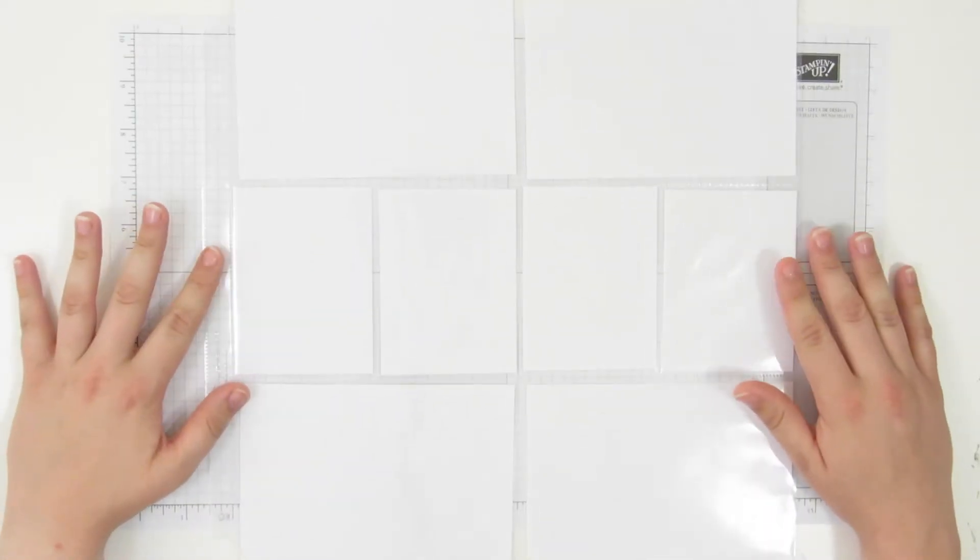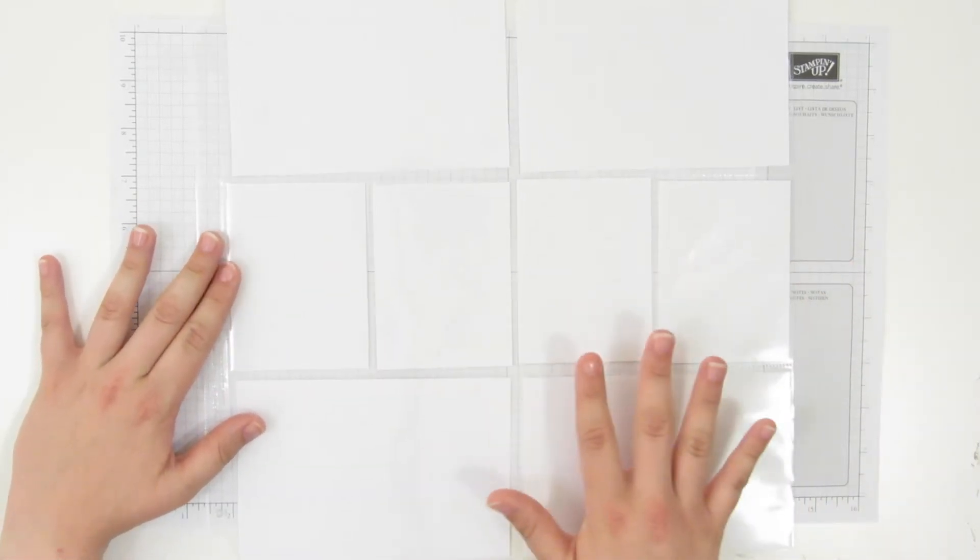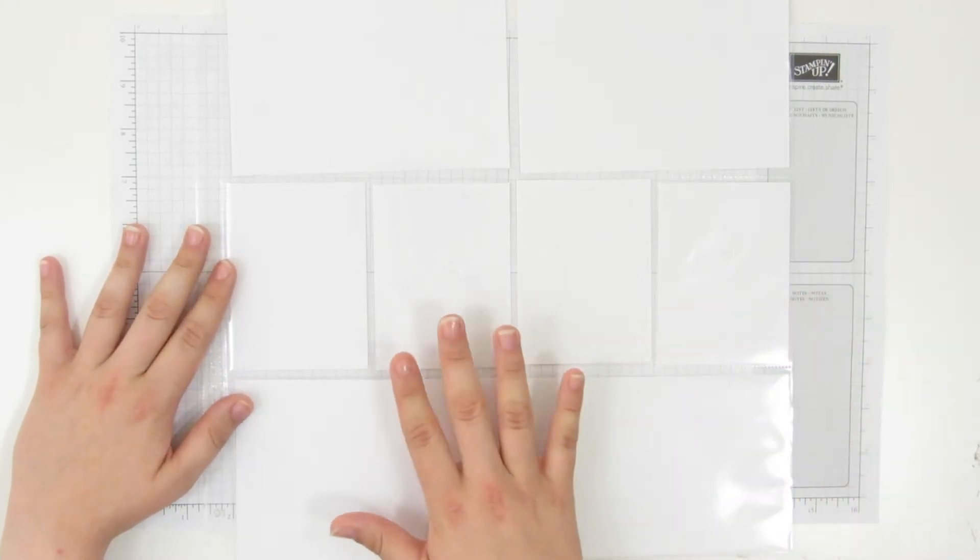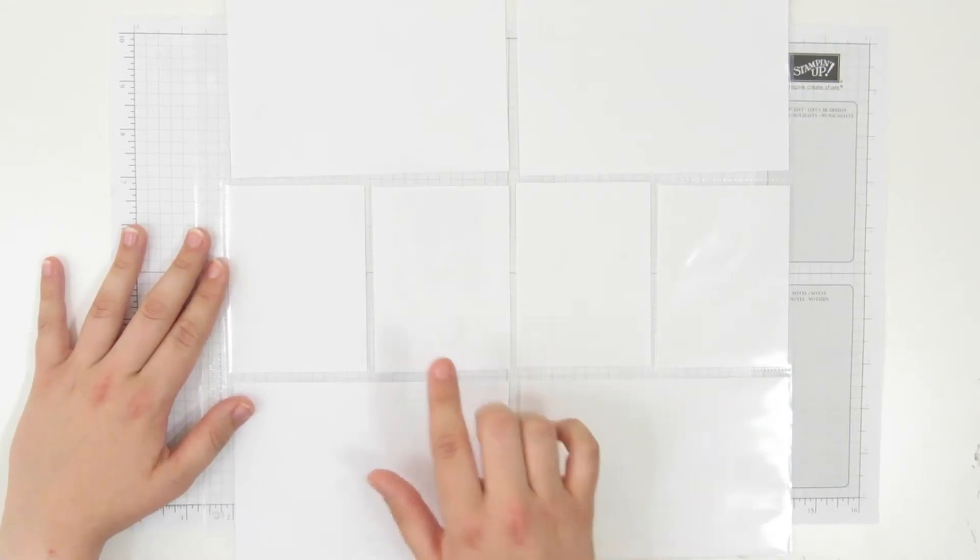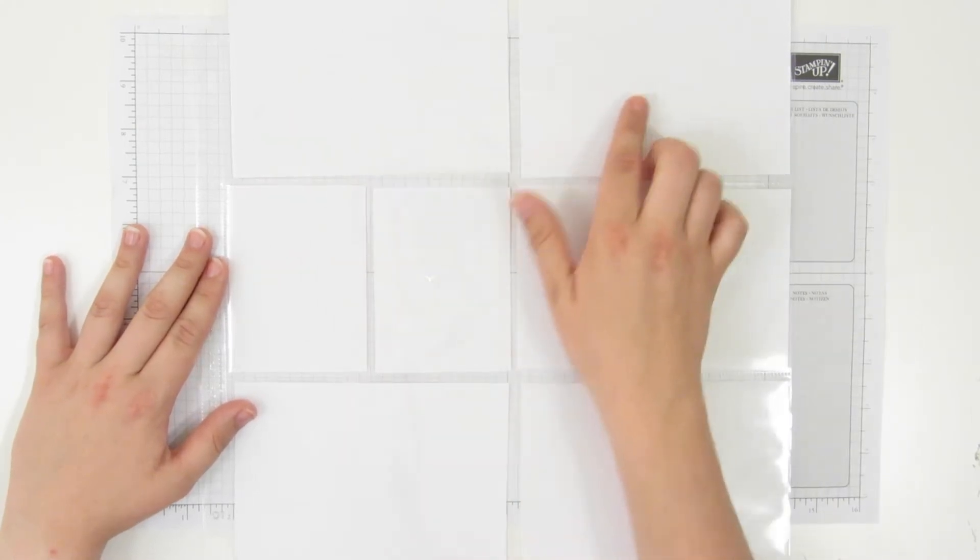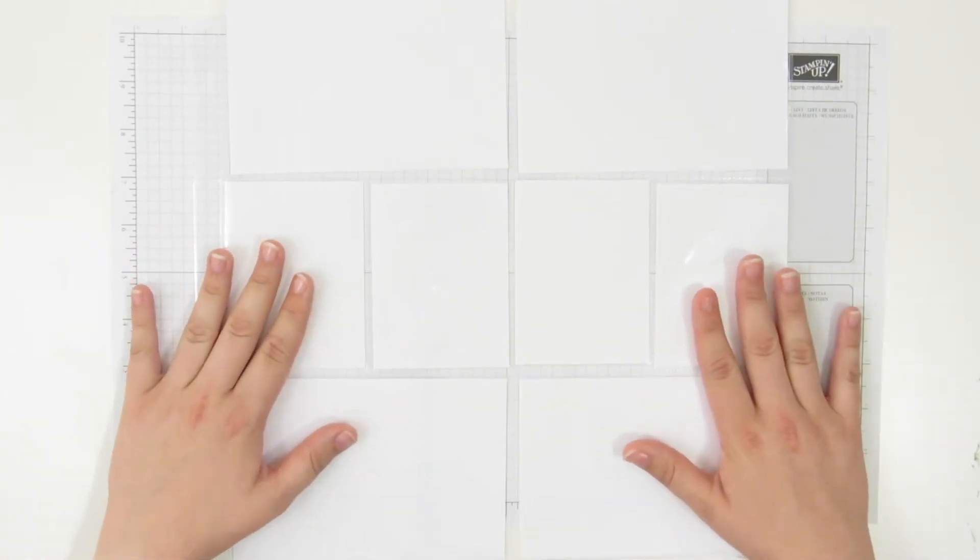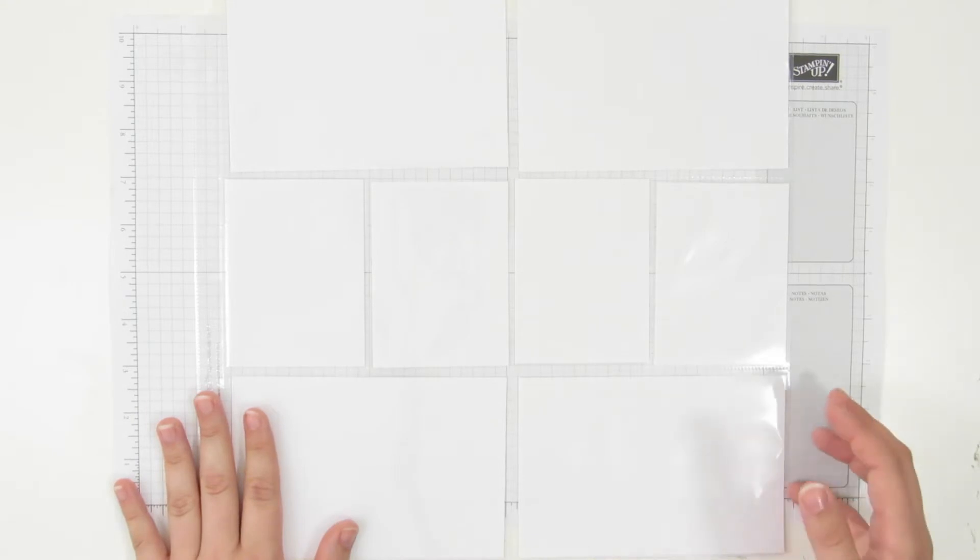These are the basic pages. This is page number one and this is the classic Project Life layout. Two of these pages will create a week. So you have your title page here and then you've got seven 4x6 horizontal photos, some 4x3 pockets for journaling, for decoration, all that fun stuff. These pages are great if you have all horizontal photos, however if you have vertical photos you're going to have to get a little bit more creative.